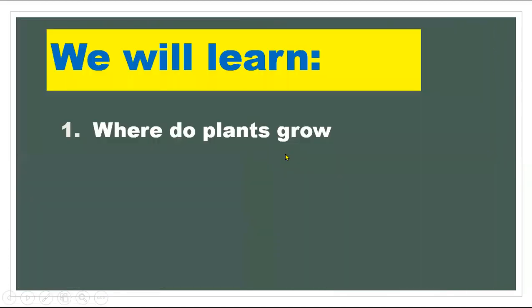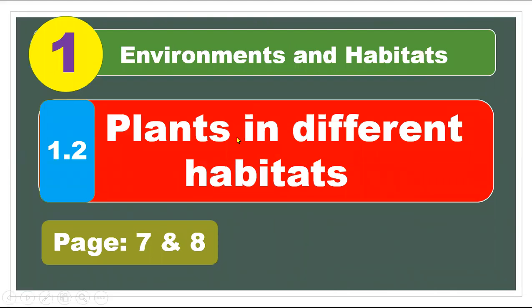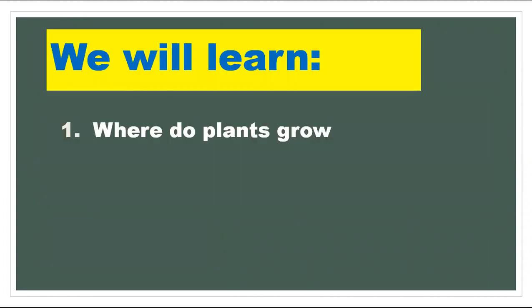In science we started from 'Plants in Different Habitats,' this is the second lesson in unit one, pages seven and eight. We learned about where plants live, types of habitats where plants can grow, and where plants have enough food to grow. Today we learned: where do plants grow?